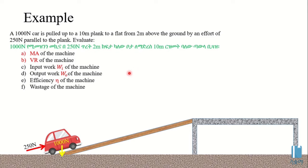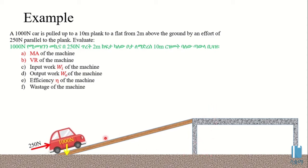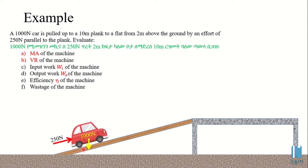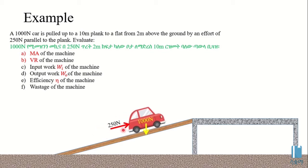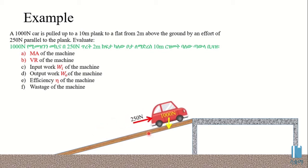We're going to have a beautiful video. So here we have a 1000 newton car pulled up a 10 meter plank to a flat from 2 meters above the ground by an effort of 250 newton parallel to the plank. So here we have a 1000 newton load in the machine, and we have a 250 newton effort applied to the machine.